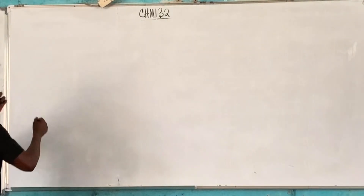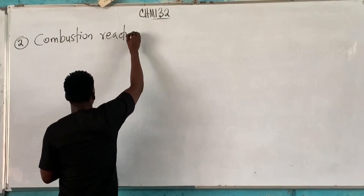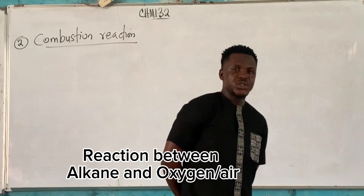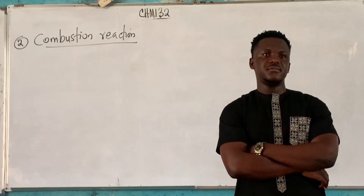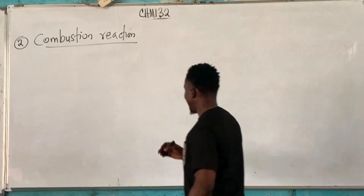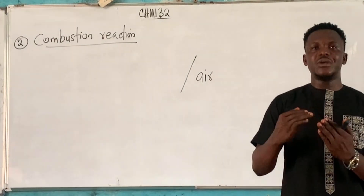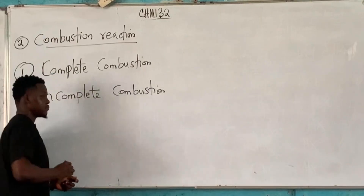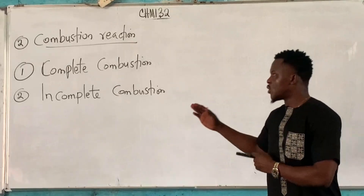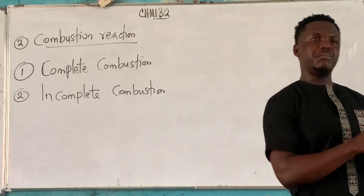The second reaction of alkanes is the combustion reaction. This is a reaction of alkanes with oxygen or air. Any time they say something reacting with air, they are referring to combustion reaction. We have two types: complete combustion and incomplete combustion. We need to know what makes combustion complete or incomplete, and what the products of each are.